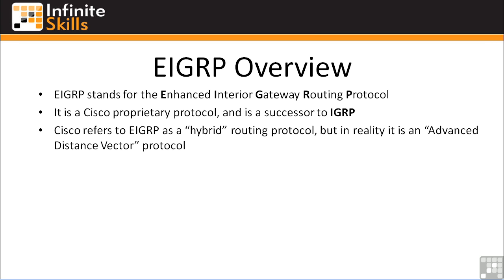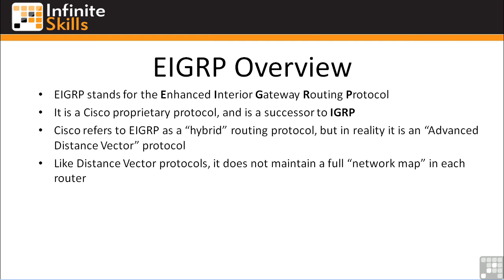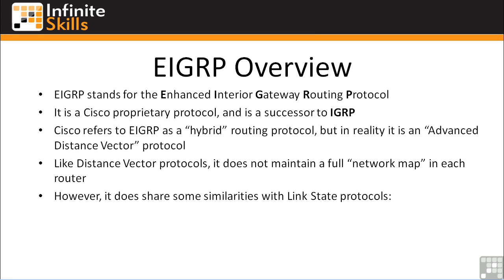Cisco refers to EIGRP as a hybrid routing protocol. They don't want to call it a distance vector routing protocol or associate it with RIP and other distance vector protocols. But in reality, it is a distance vector routing protocol — an advanced distance vector protocol. Like distance vector protocols, it does not maintain a full network map in each router. All it knows is the metric and the next router in line, which classifies it as distance vector. However, EIGRP does have some similarities with link state protocols, which is why it's called an advanced distance vector or hybrid protocol.